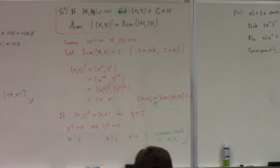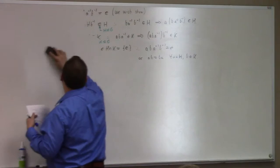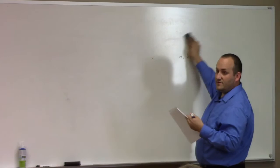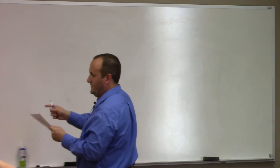In retrospect, earlier this lecture we proved by explicit computation that the order of (x, y) in D3 was 6. The order of x is 3, the order of y is 2, and the least common multiple of 2 and 3 is 6. This proof is exactly the same reason we saw that element had order 6. This theorem is surprisingly useful.